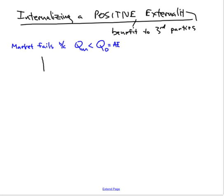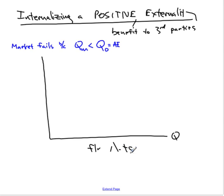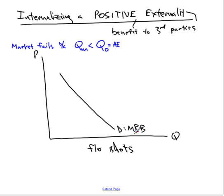Why do we want more? For something like flu shots, there's a demand curve based on the marginal private benefit of getting a flu shot — my willingness to get vaccinations depends on how much I think I'm going to benefit. The private benefit of getting flu shots or healthcare in general is what determines the level of demand.